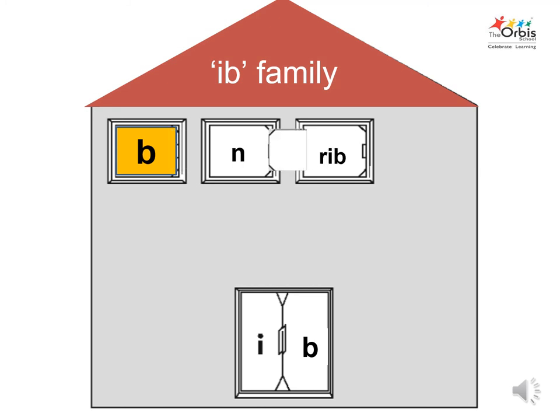Now, let's find the name of the third family member living in the house. The phonics sound of R is R. Let's combine the sound of R with the sound of ebb to get the name of the person inside the window. That is Rib. Say hello to Rib.